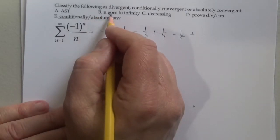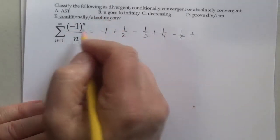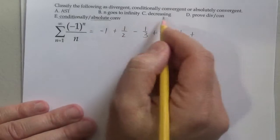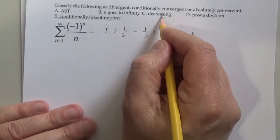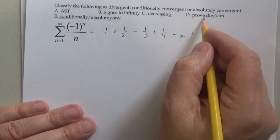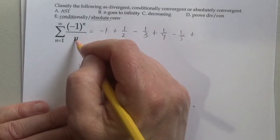Letter B is what happens to my series as it goes to infinity without the negative 1. Letter C: show that the series is decreasing. Letter D: prove divergence or convergence of the series without the negative 1.